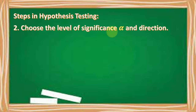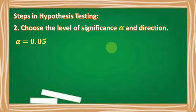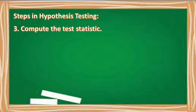Number two, choose the level of significance or alpha and direction. We're going to choose the alpha level to be 0.05, and the direction given is left-tailed.